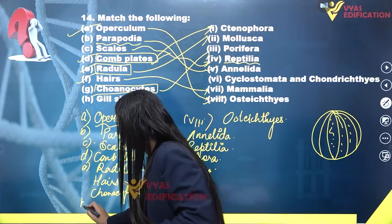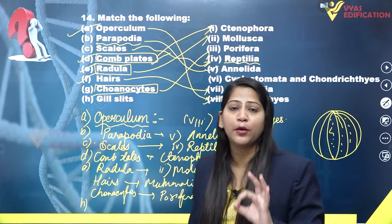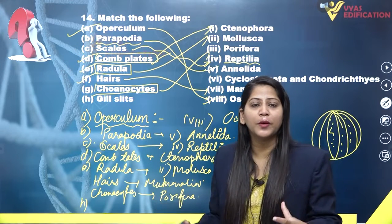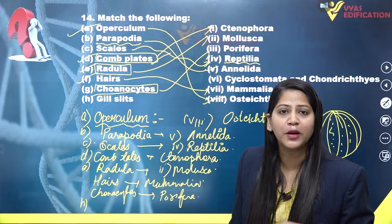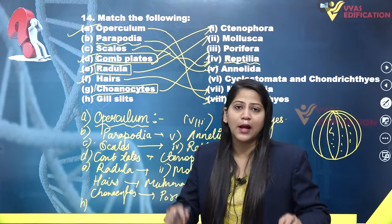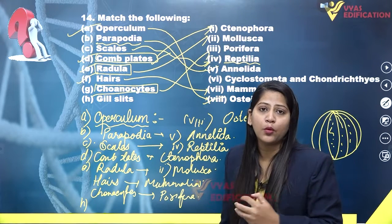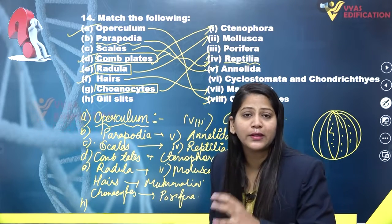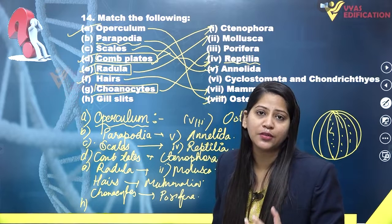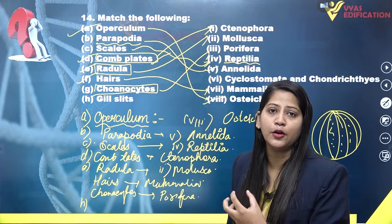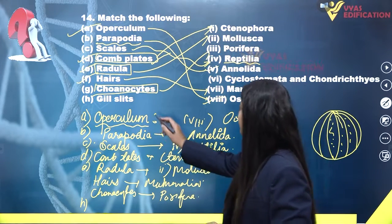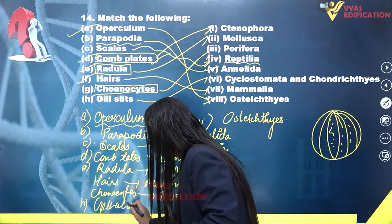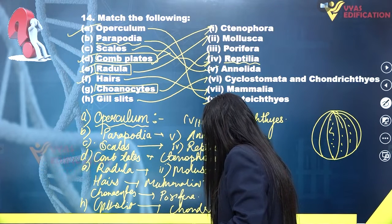The last option is gill slits. Gill slits without operculum are present in the members of Chondrichthyes. Under the superclass Pisces, which includes all fishes, we have two classes: Osteichthyes and Chondrichthyes. Osteichthyes includes all bony fishes whose gill slits are covered with an operculum, while Chondrichthyes includes cartilaginous fishes whose gill slits are not covered with any operculum. So gill slits will match with Chondrichthyes.